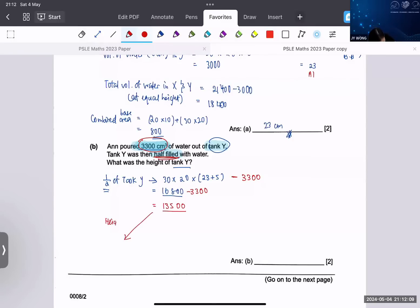Some of you would have gone this way to find the height when it's half filled. If you find the height when it's half filled, you will take volume again divided by the base area, which is 20 times 30. That will give you 22.5. That's half. Then you take 22.5 times 2, you get 45.